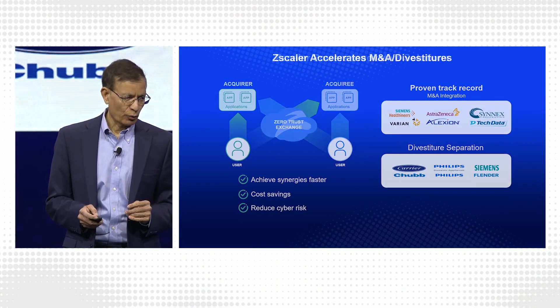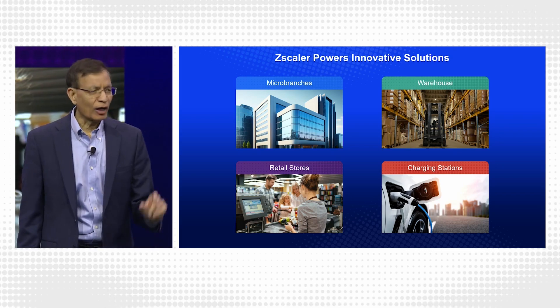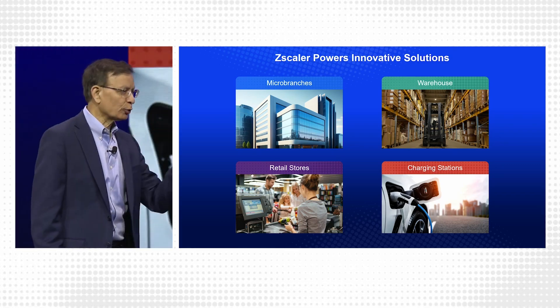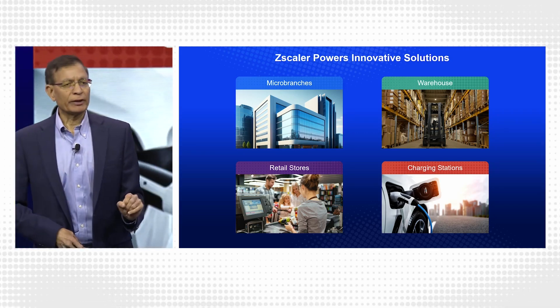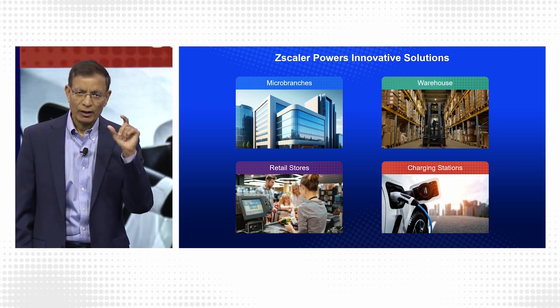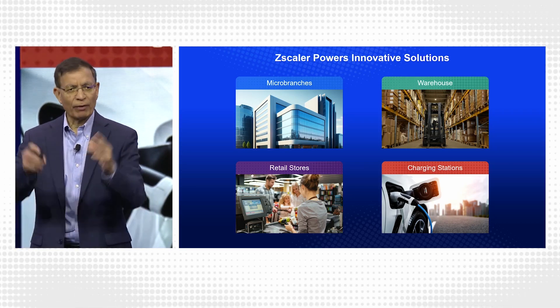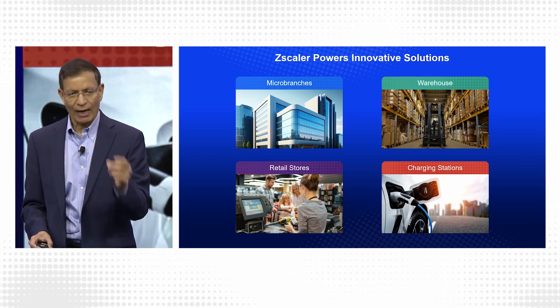Another exciting area is microbranches. How long does it take to set up a new branch office? IT itself requires a few months — ordering the circuit, a router, a firewall. Now customers are simply able to do this in a matter of days, weeks, or even hours. For banks working with us, their microbranch is becoming cashless: essentially a couple of laptops or tablets with a Zscaler agent and a 4G SIM card connects to our cloud and talks to banking applications. You can have the branch up and running in hours.